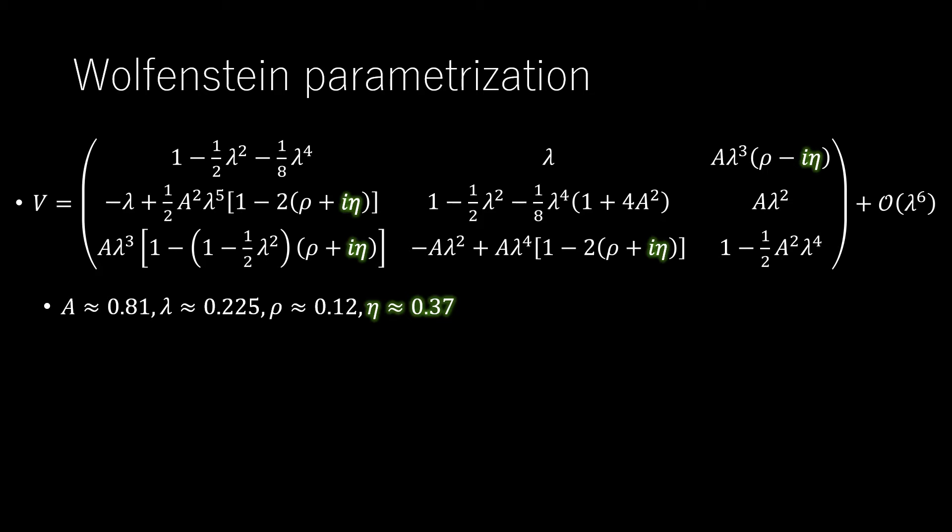The mixing angles in the CP violating phase must be determined from experiments. It is instructive to approximate the resulting matrix by the so-called Wolfenstein parametrization with parameters a, lambda, rho, and eta, where a non-zero value of eta is indicative of CP violation. The current value given by the particle data group is eta approximately equal to 0.37.